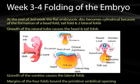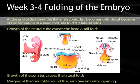As we move from week three into week four, embryonic folding starts to take an important role. It's at the end of the third week that the flat embryonic disc will become cylindrical because of the overwhelming growth rate, which will cause the head fold, tail fold, and two lateral folds.